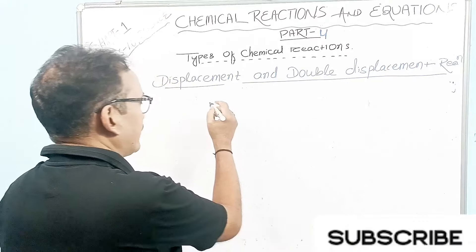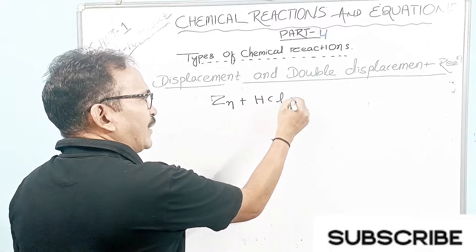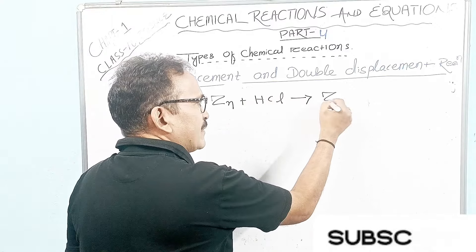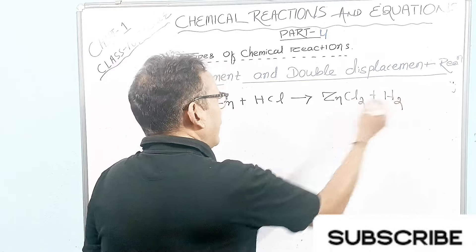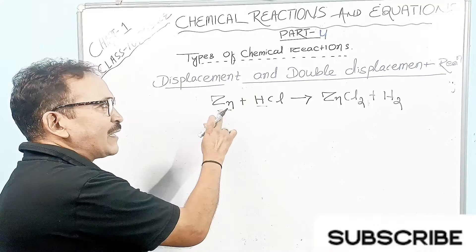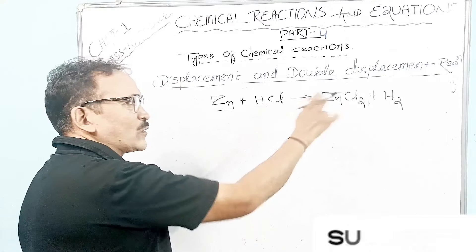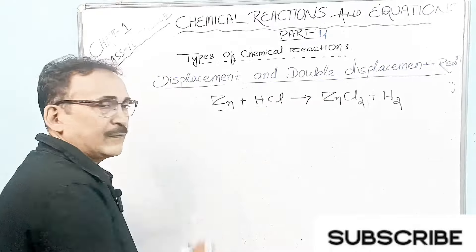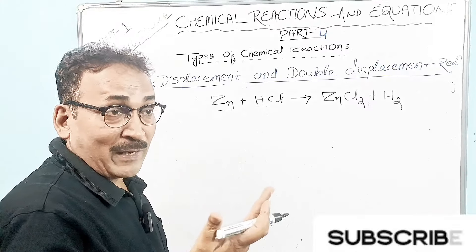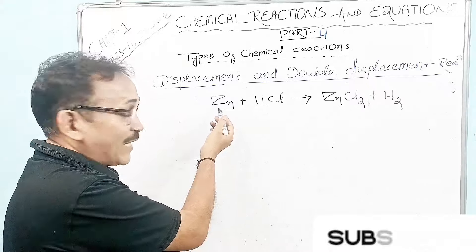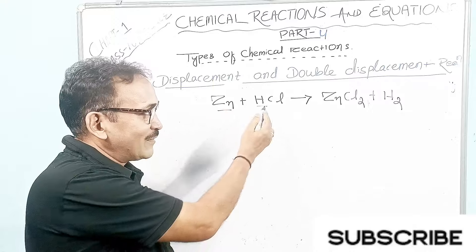Take an example: zinc plus hydrochloric acid forms zinc chloride (ZnCl₂) plus hydrogen gas. In this reaction, zinc displaces hydrogen to form zinc chloride, and hydrogen gas is evolved. Here, zinc is the metal and is more reactive than hydrogen — this is an example from metals.